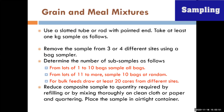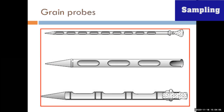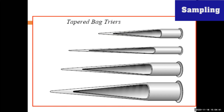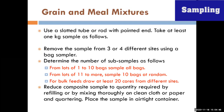For grain and meal mixtures, grains are usually supplied in bulk on a truck or trolley, or in bag form. Use a slotted tube or rod with a pointed end — known as a grain probe. There are different types of probes: some are used for grain and others for meal-type materials. Take at least one kilogram of sample by removing material from three or four different sites using a bag sampler. Bag samplers can be inserted into bags to draw the sample.